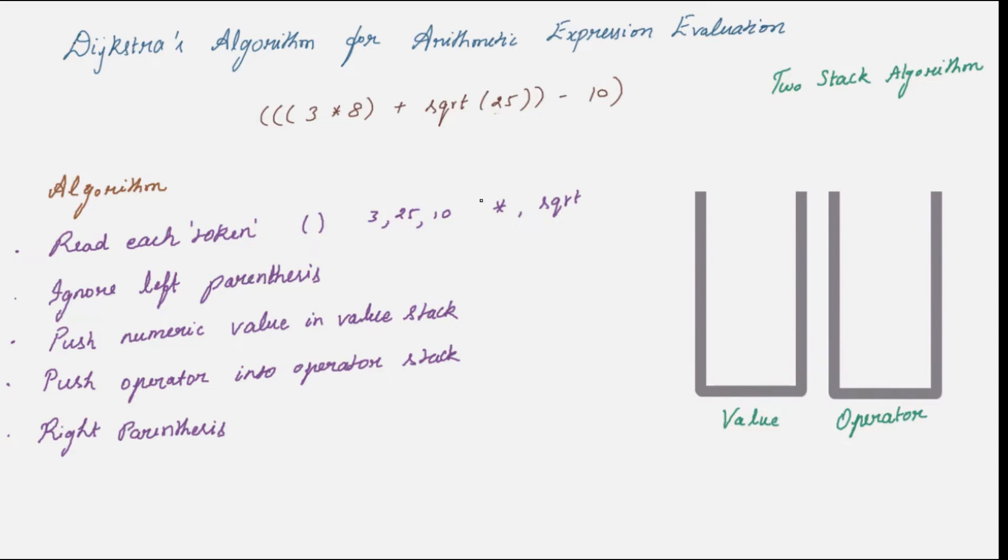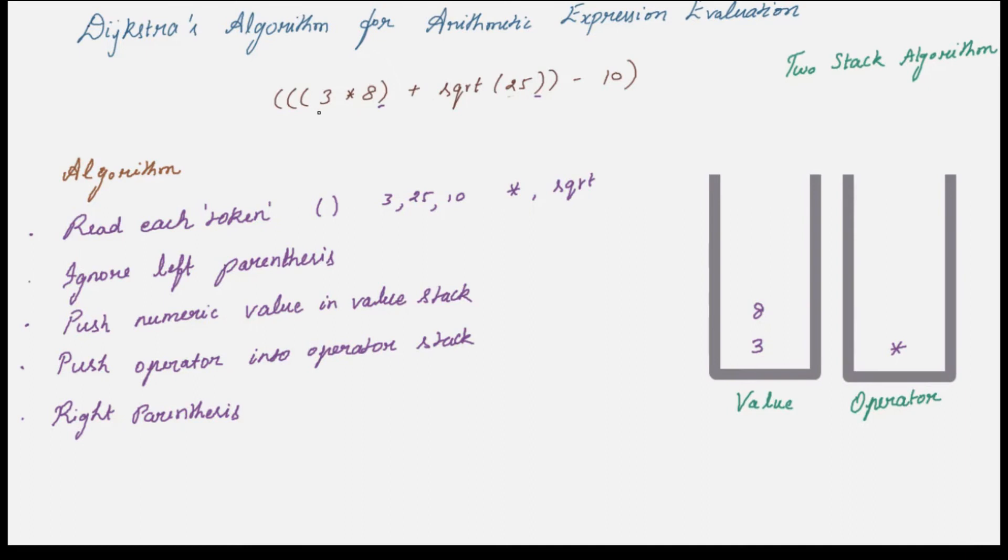Before that let's try to apply these steps in our example here. We have three left parenthesis which we can ignore. Then we have the token 3. It's a numerical value so push it into the value stack. Now we have an operator, push it into the operator stack. The next token is again a numerical value so push it into the value stack. Now you have a right parenthesis. Wherever the right parenthesis is, it denotes the end of a sub-expression. So it's time for us to do some evaluation. You compute and finish off that mini expression. So how do you evaluate?